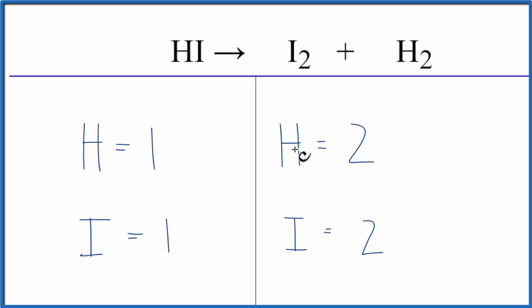It looks like I have two hydrogens on the product side, one here, two iodines, one here, so I need to double this. And I can do that by putting a coefficient of two. This two applies to all of these atoms, so hydrogen one times two, that gives us two, iodine one times two, that gives us two, and we're done.